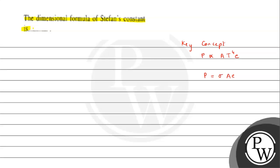We denote the formula as P = σ·e·A·T⁴. This is the formula we will use to find the dimension of Sigma. Here, A is area of cross section, e is emissivity which is a dimensionless quantity, T is temperature, and P is power.